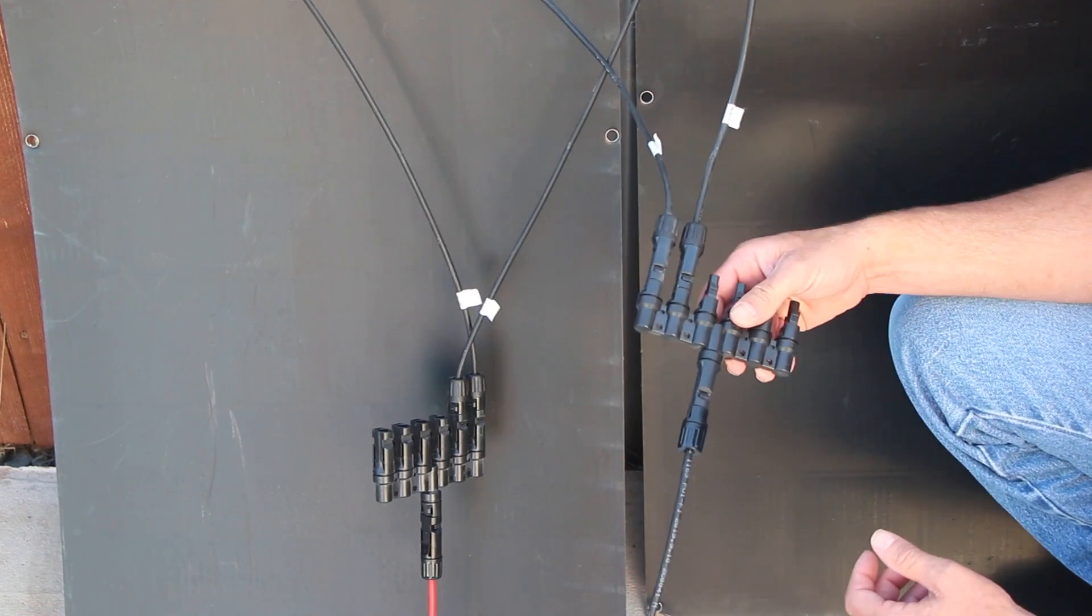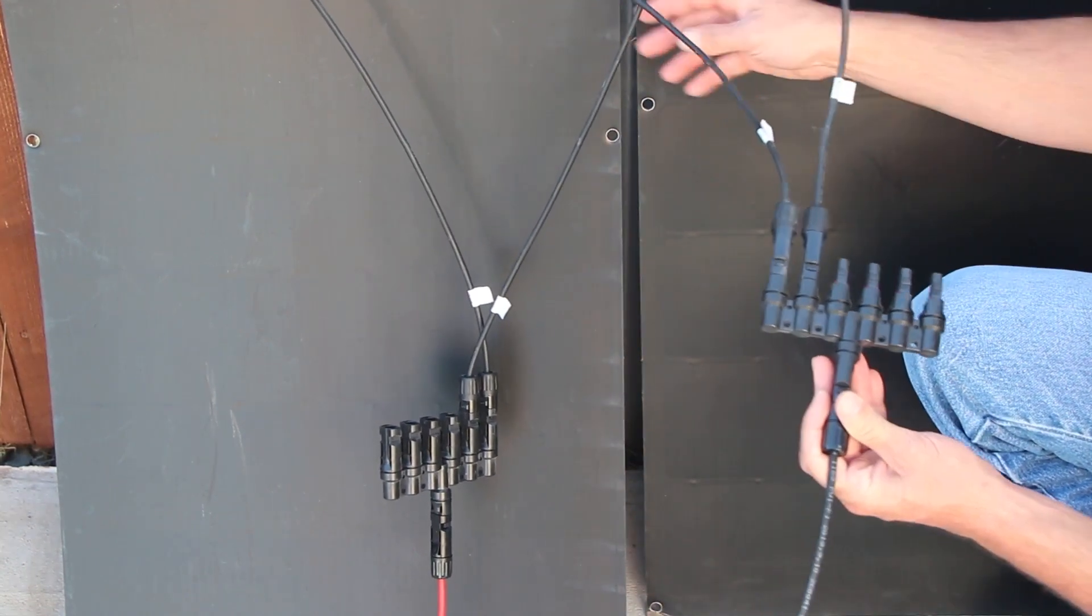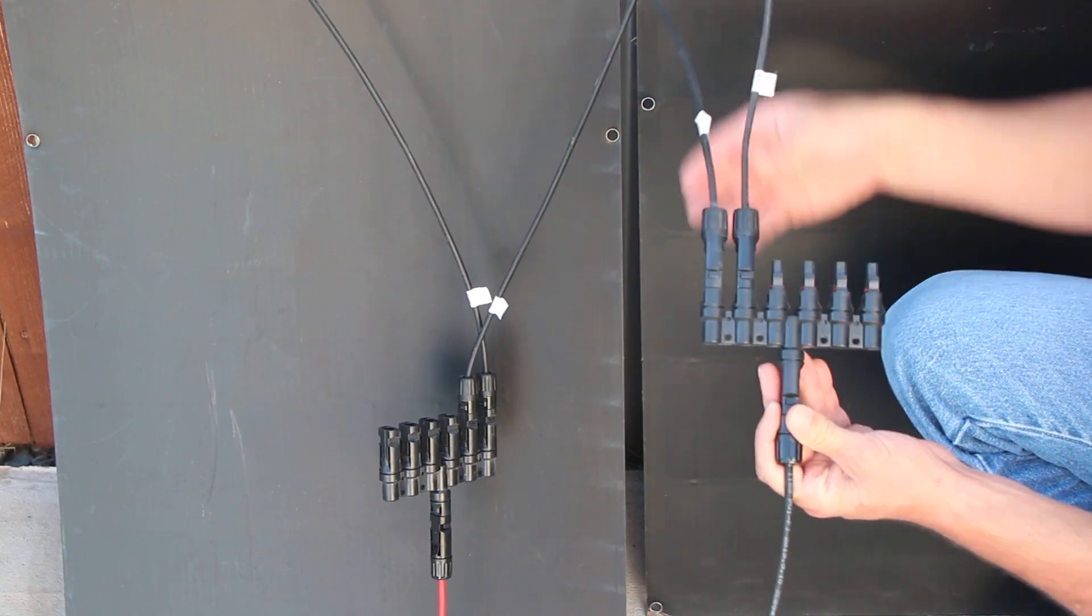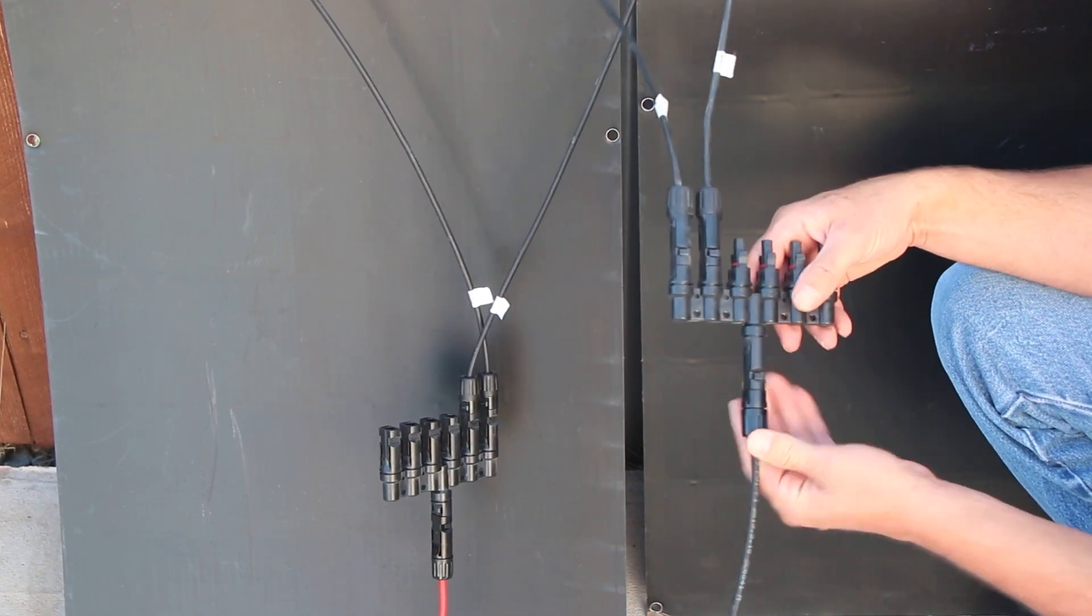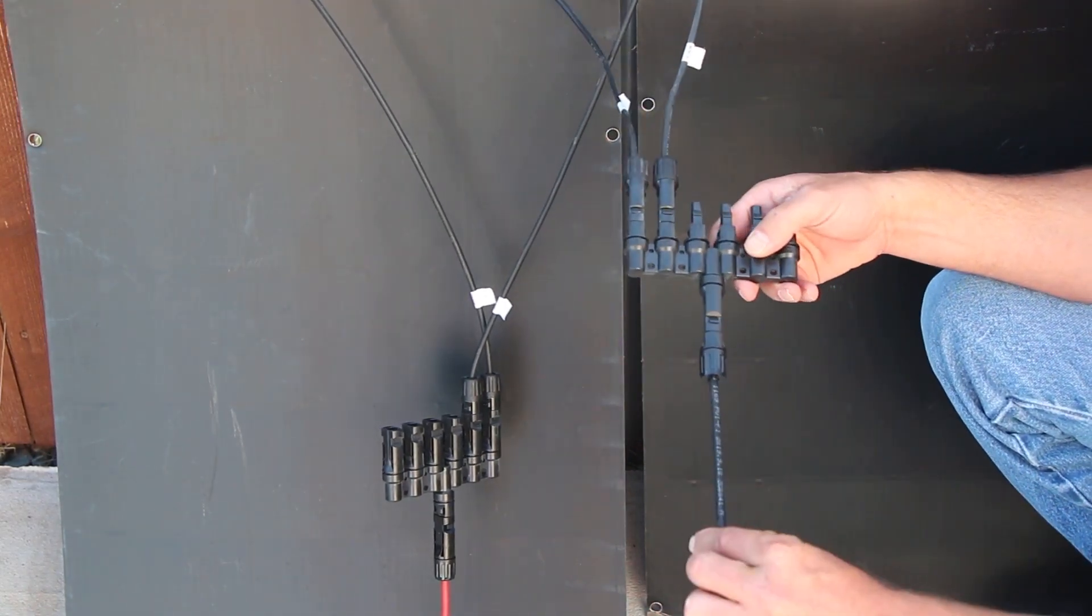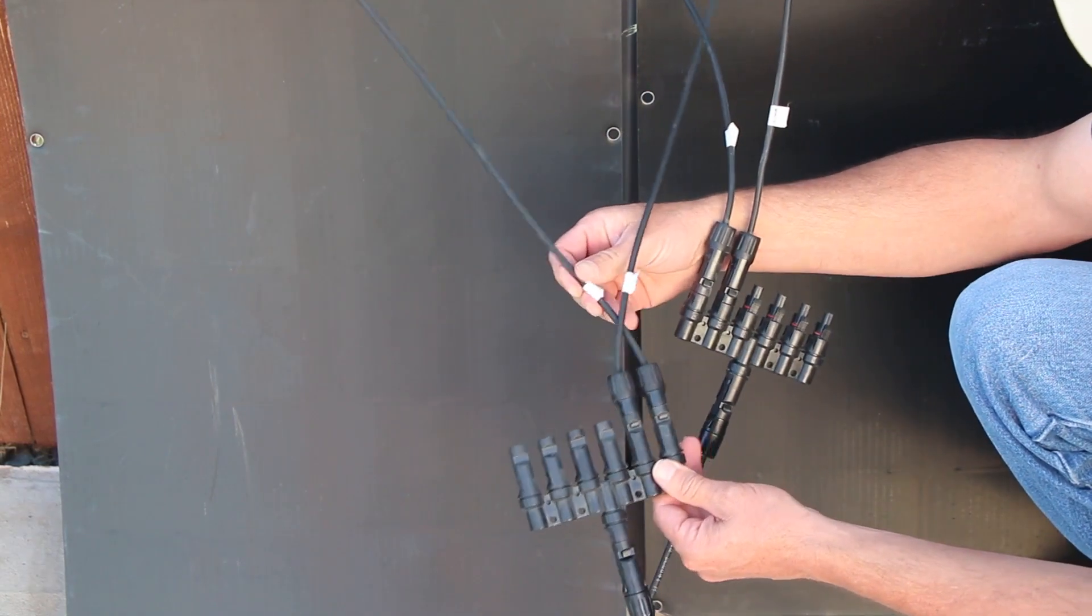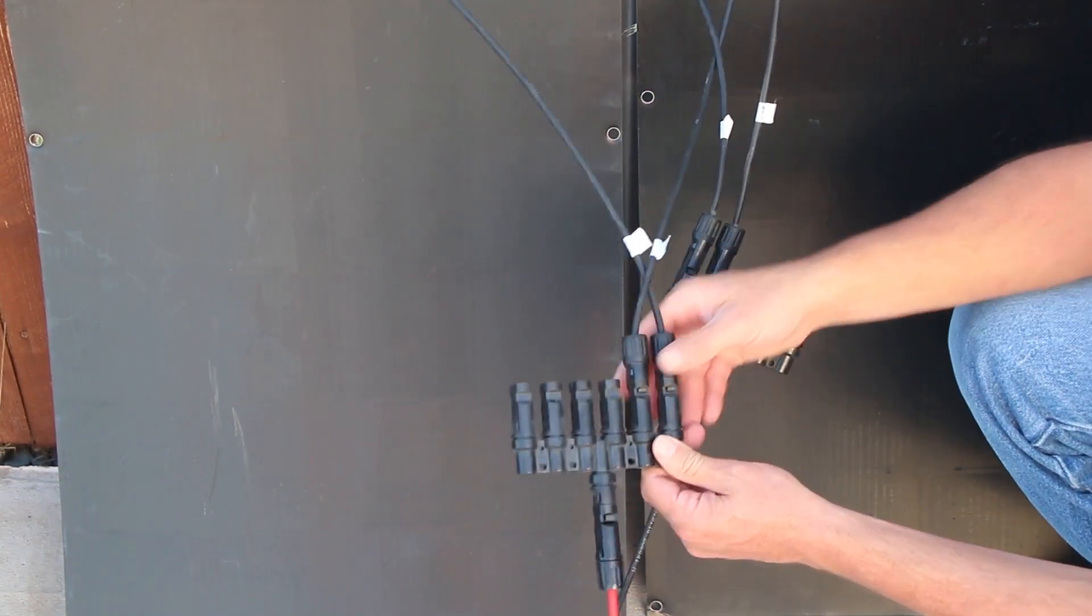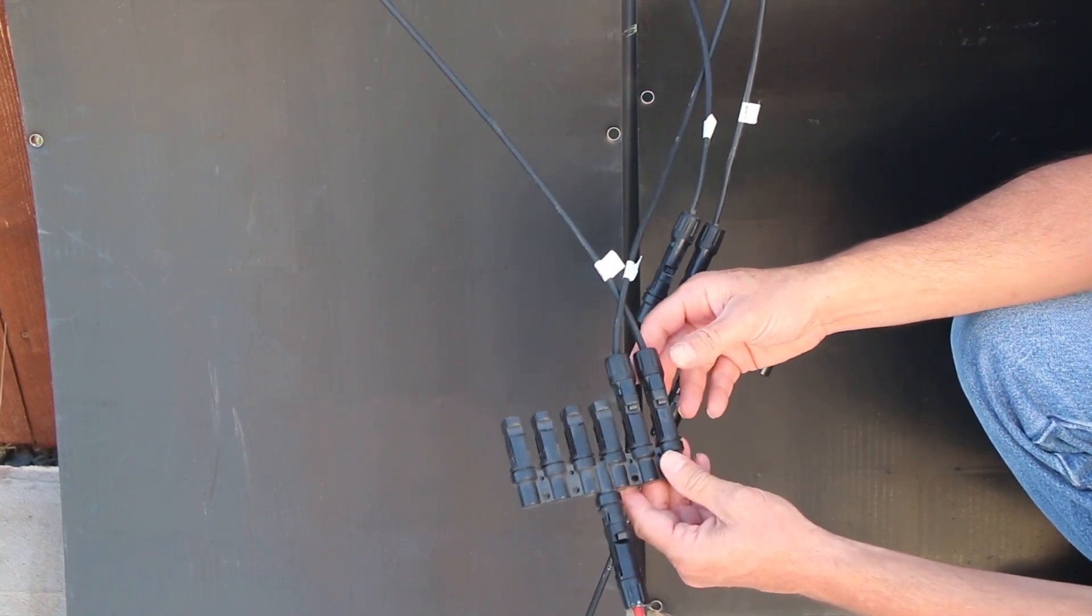Okay, so this is a parallel connection. This is the negative line, we've got a negative from one solar panel and then the negative from the other solar panel going into this branch connector. It's connecting, we could put more panels, but this is connecting them into one line. And then the positive, we have the positive from one solar panel and the positive from the other solar panel going into this one line. This is what's called a parallel connection.